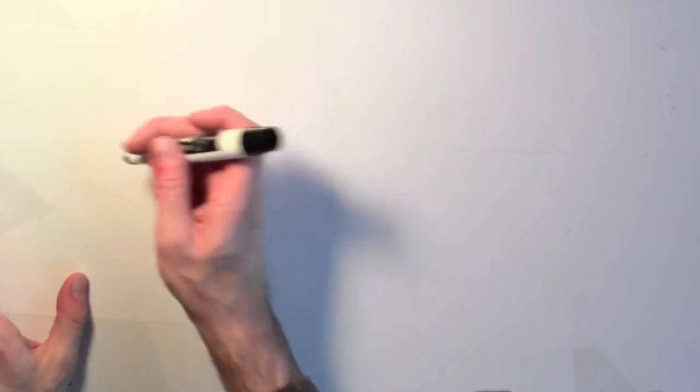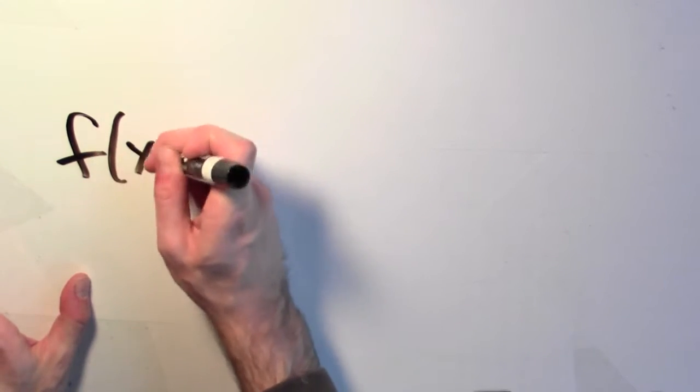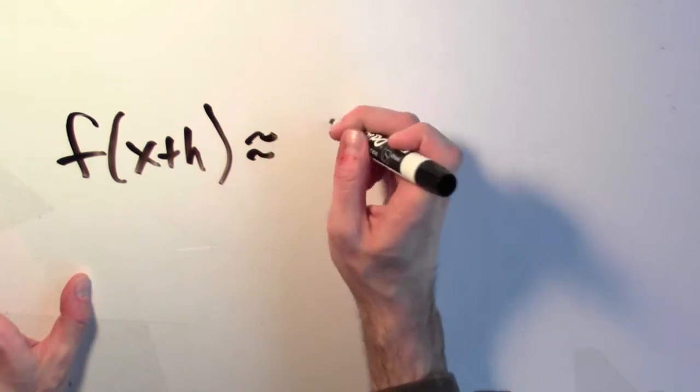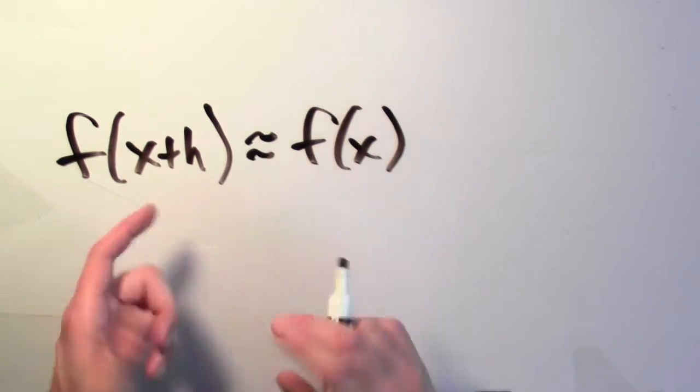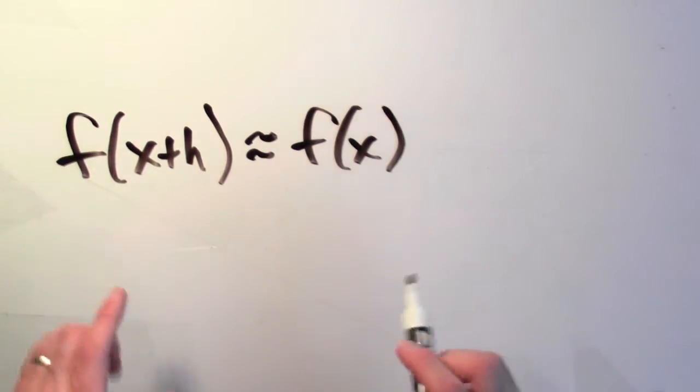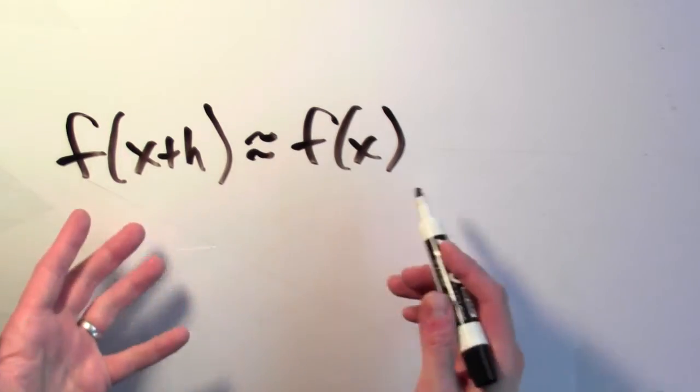We've seen a little bit of this linear approximation business already. A long time ago, we saw this: that f(x+h) is approximately f(x). That much is really just because f is continuous, right? Nearby input should be sent to nearby outputs.